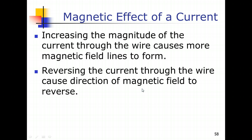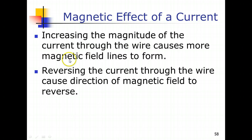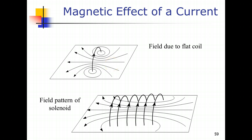If we use currents of differing size — for example, 1 ampere compared to 10 ampere — increasing the size of the current through the wire increases the strength of the magnetic field. This increase is reflected in the drawing by drawing more magnetic field lines. Reversing the current will, of course, cause the direction of the magnetic field lines to reverse. That completes our understanding of how a magnetic field looks like around a straight conductor.